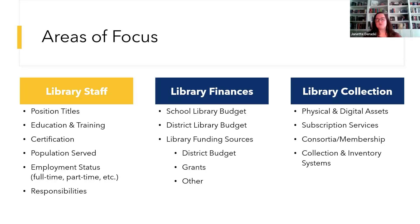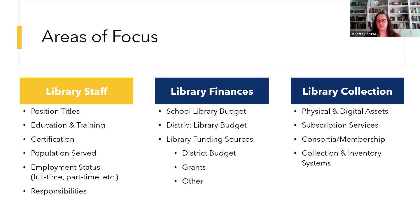First and foremost, we're interested in locating schools with libraries and identifying their staff by title. Something that makes it difficult to examine school library workers is that in just about every district, they are called something different. In fact, we've identified about 330 unique position titles just through this project. We're interested in credentials, education, and training school library staff members have. This includes any formal or informal training related to the fields of education and library and information science, as well as endorsements and certifications. This data can be used to inform professional development and training opportunities.